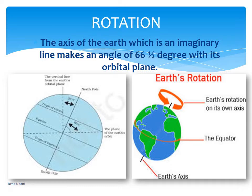The plane formed by the orbit is known as the orbital plane. See the picture on your left — you can see a dotted line drawn horizontally. That's the earth's orbital plane, which makes an angle of 66 and a half degrees. A fun fact: the ancient Indian astronomer Arya Bhatta had stated that the earth is round and that it rotates on its axis.